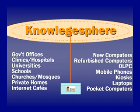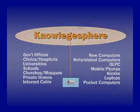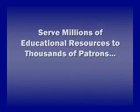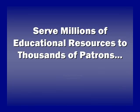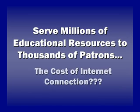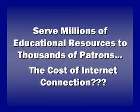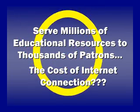A city or university might build a knowledge sphere and make it available to the surrounding community. As people under the knowledge sphere connect their own computers and handheld devices, each becomes an independently funded access point. The eGranary Digital Library Knowledge Sphere gives us the capacity to serve millions of educational resources to thousands of patrons at speeds that can be thousands of times faster than the internet. So, what's the cost of the internet connection in all of this? Nothing.